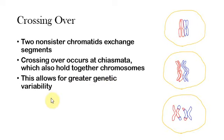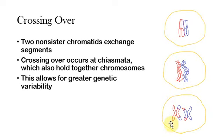Because crossing over is occurring, this allows for hugely greater genetic variability between the parents and the offspring. If they're just passing on a whole chromosome, then all those genes within the chromosome have to stay together. But since they're exchanging little sections of the chromosomes, they can pass on some genes but not others just by random chance. And of course, all of evolution depends on random chance.